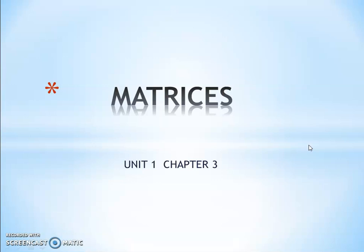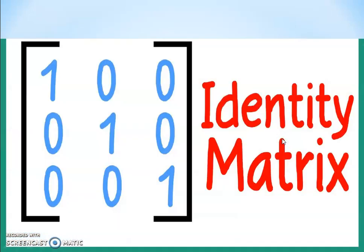In today's lecture, our main chapter is Matrices, Unit 1, Chapter No. 3. Today's lecture is totally dependent on the identity matrix, which has the order 2 by 2 or 3 by 3. We have to solve examples based on the identity matrix.